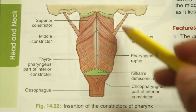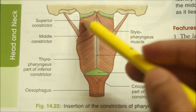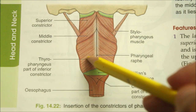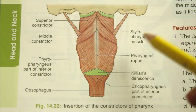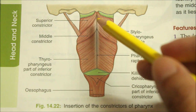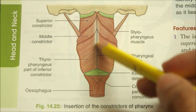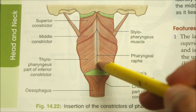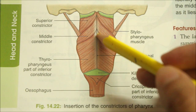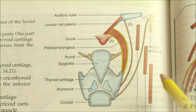Looking at the insertion of the constrictors: the superior, middle and inferior constrictors are all inserted into a median raphe on the posterior wall of the pharynx. The upper end of the raphe reaches the base of the skull.